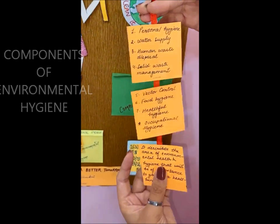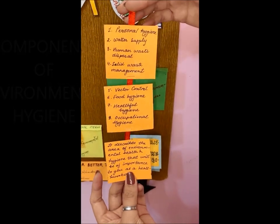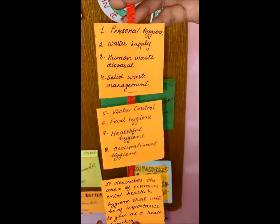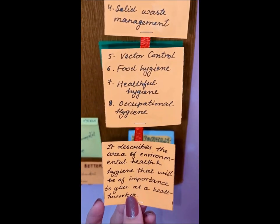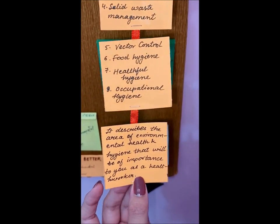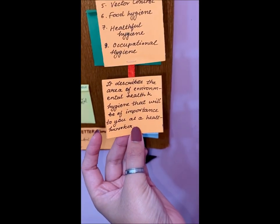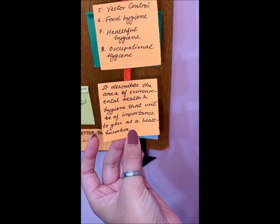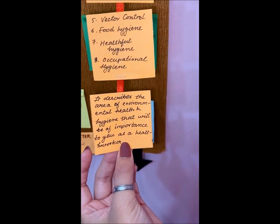The components are: personal hygiene, water supply, human waste disposal, solid waste management, vector control, food hygiene, healthful housing, and occupational hygiene. These describe the area of environmental health and hygiene that will be of importance to you as a health worker.